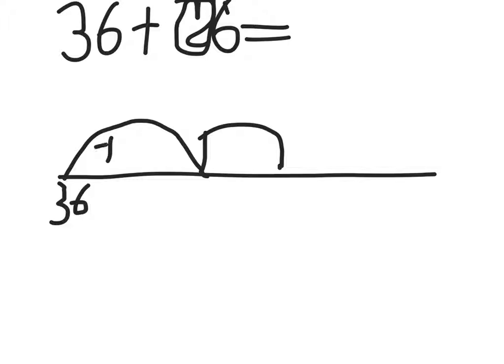So add 10, add 10, because the first part of the number is the 10 so I start with the 10. And now I know that 36 add 10 equals 46, and then 46 add 10 equals 56.